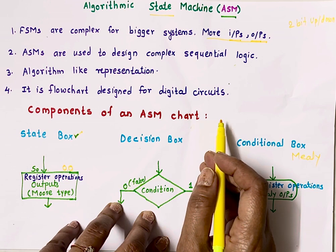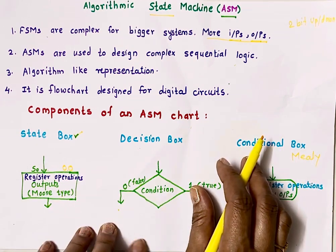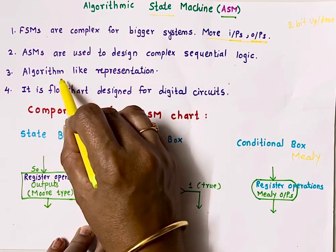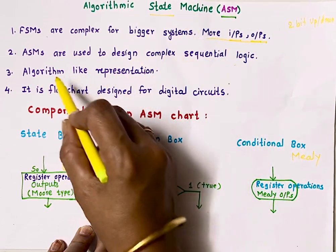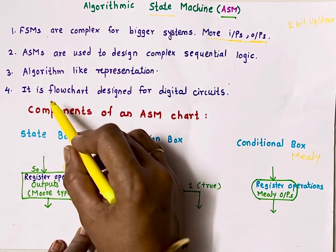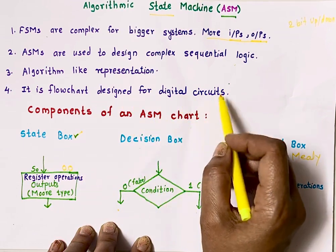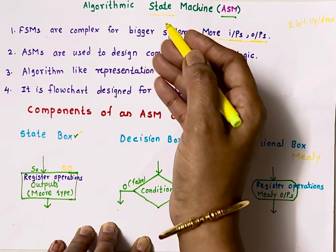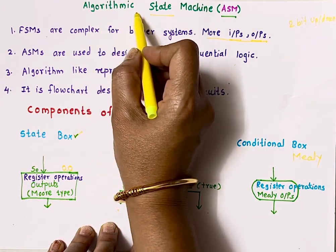When we hear the word algorithm or flowchart, what comes to mind? It's software. But here, ASMs are used to design hardware. The name is given as algorithmic state machine because the representation is like an algorithm — a step-by-step flow. So, ASM is a flowchart designed for a digital circuit. Step-by-step behavior of hardware is modeled, and that is why the name is given as algorithmic.